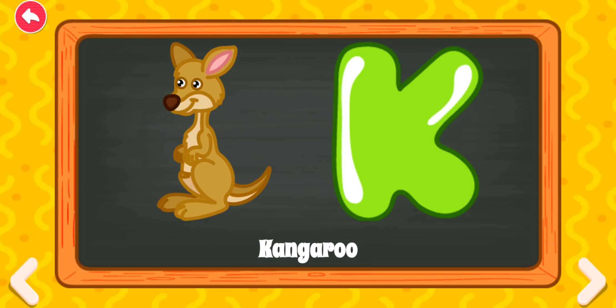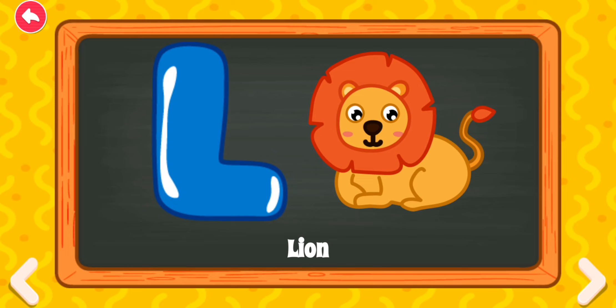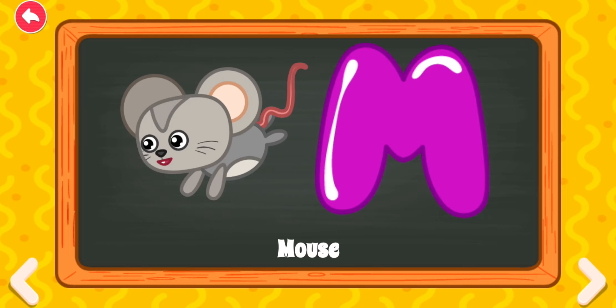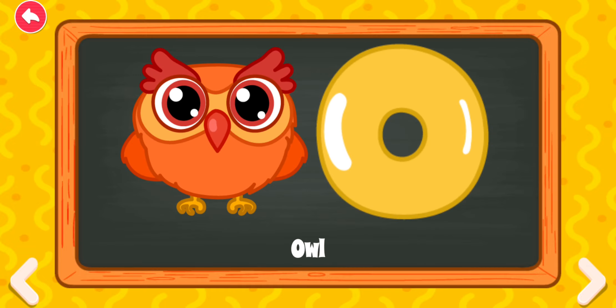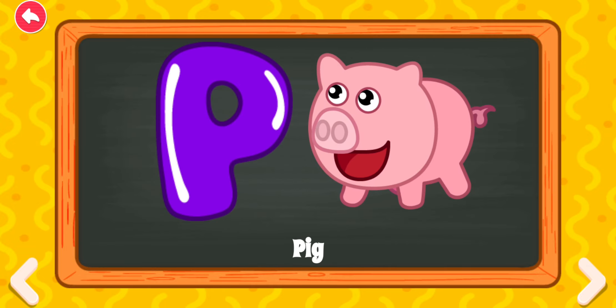K for kangaroo. L for lion. M for mouse. N for nest. O for owl.